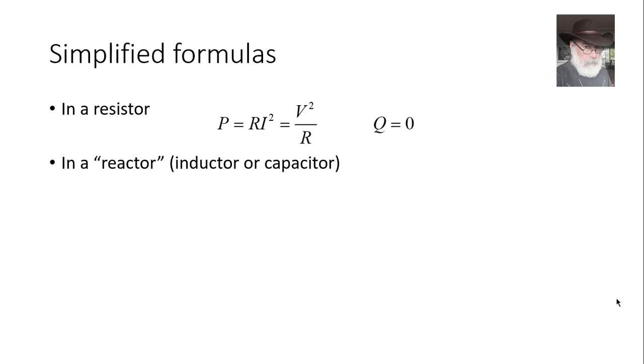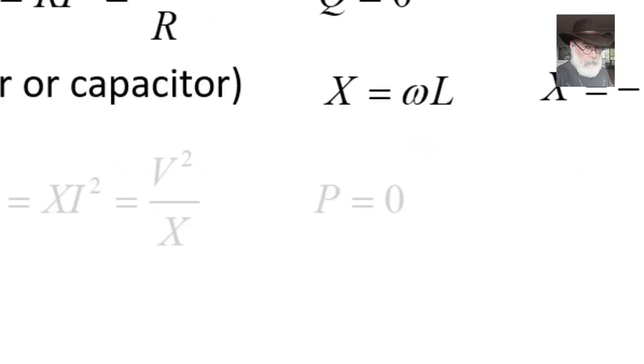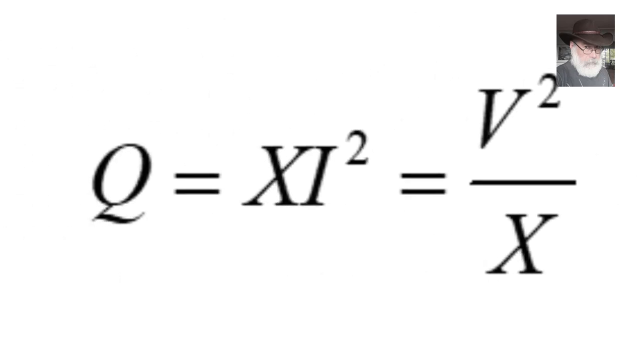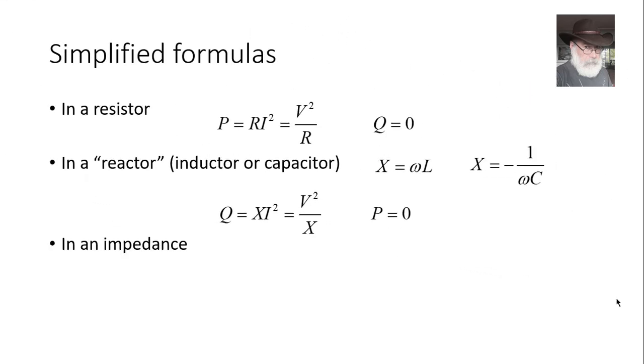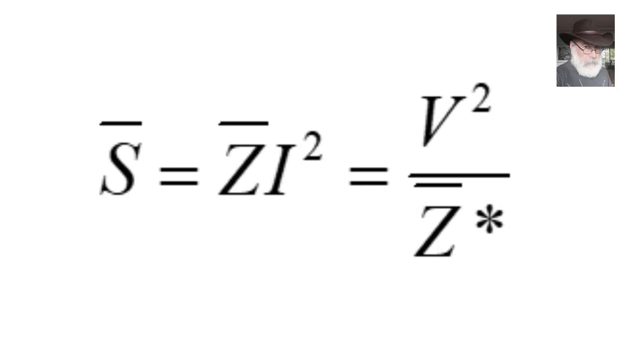In a reactor, that is, in an inductor or a capacitor, we define the reactance as X, which is a real number. This way for the inductor, a positive real number. This way for the capacitor, a negative real number. Reactors, they don't deal in average power. The average power P is zero in them. But Q in a reactive component is X I squared, I is RMS amperes, or V squared over X, V is RMS volts. P is always zero. If what we have is an impedance, we also have simplified formulas like this one and that one, if we know the RMS amperes or the RMS volts. That's what we do.